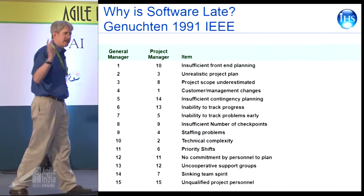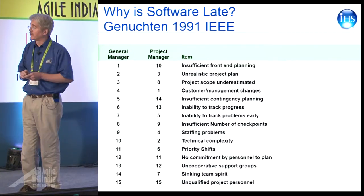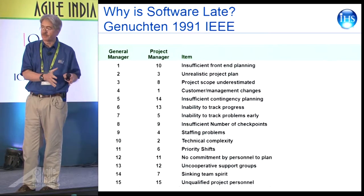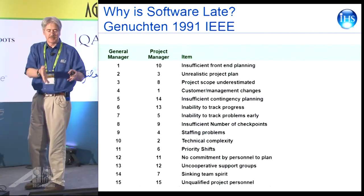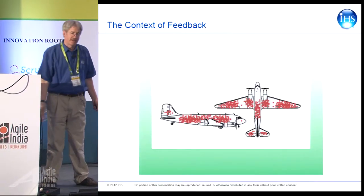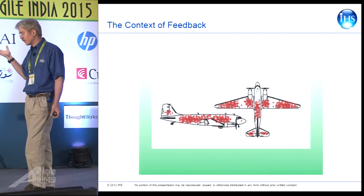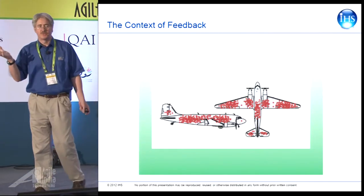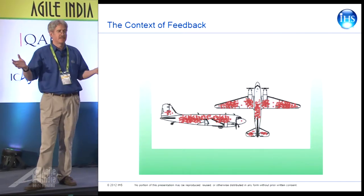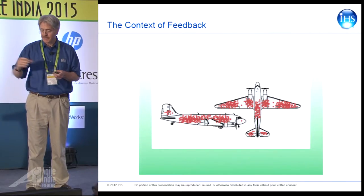So, why is software late? I came across a paper by Gnuchin from 1991. He did something really interesting — he surveyed both general managers, the business side of the world, and project managers. Before I go through the findings, I want to give you a little story on the context of feedback. During World War II, the British were doing advanced data analytics on airplanes coming back from bombing episodes in Germany.